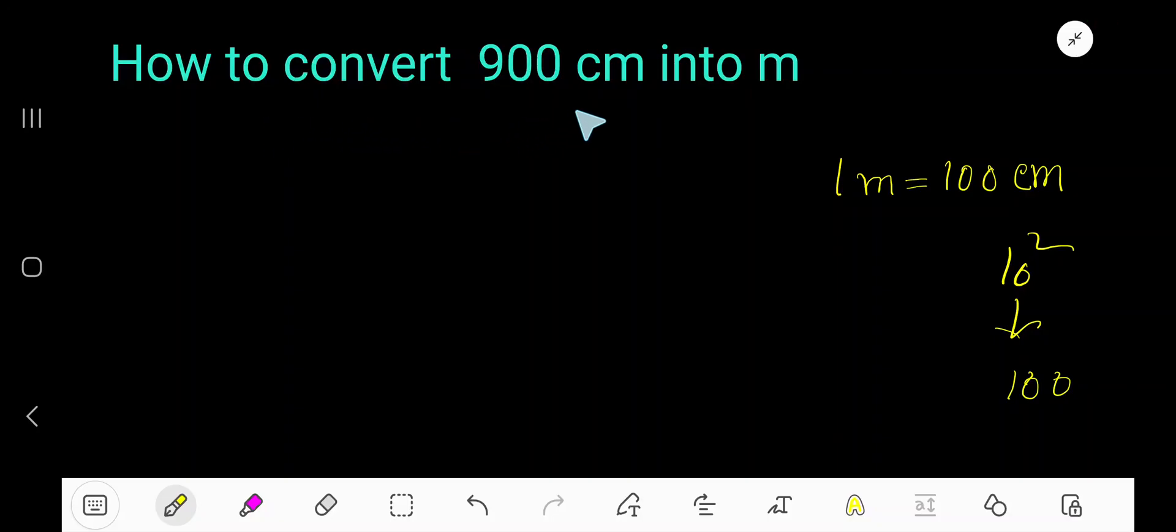How to convert 900 centimeters into meters. Let me write the problem: 900 centimeters. We'd like to convert centimeters to meters. So to cancel this centimeter, we need to write the centimeter part of this conversion equation at the bottom.